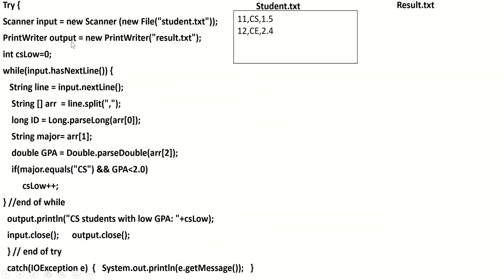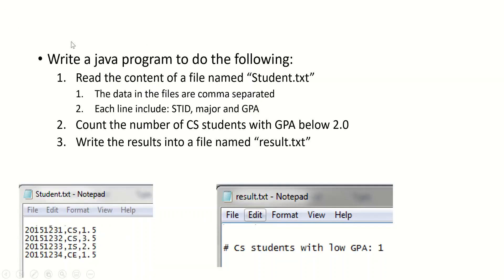Bismillah ar-Rahman ar-Rahim. In this session we will write a Java program to read from a text file and write into a text file. The question says: read the content of a file named student.txt. The data in the file are comma separated. Each line will have a student ID, major, and GBA. We need to count the number of CS students with GBA below 2, and then write the result in a file named result.txt.